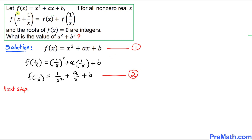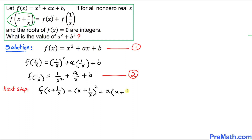Next, we find f(x + 1/x). Looking at equation number 1, wherever we see x we replace it by (x + 1/x). So this becomes (x + 1/x)² + a·(x + 1/x) + b. We'll use the well-known formula (a + b)² = a² + 2ab + b² to expand this.